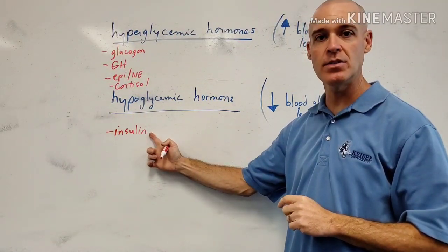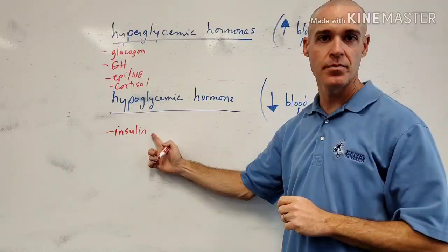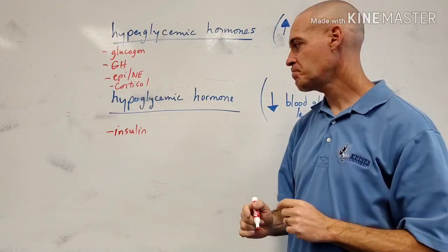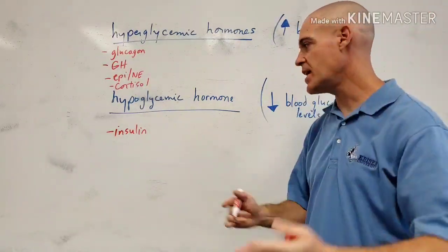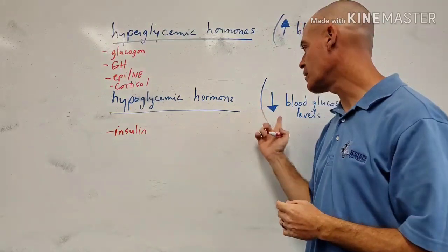This also comes from the pancreas. This is from the beta cell of the pancreas. And this is the interesting part, it's only one hormone to bring down blood sugar levels.